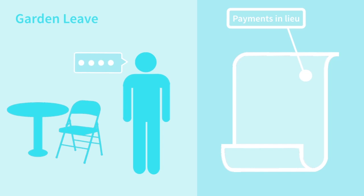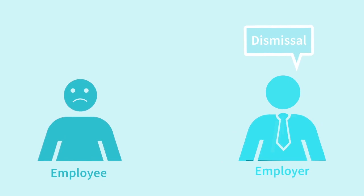A garden leave clause enables the employer to require the employee not to attend work during their period of notice, but to stay at home on call. It is often used to keep an employee out of the office and away from a competitor during their period of notice.